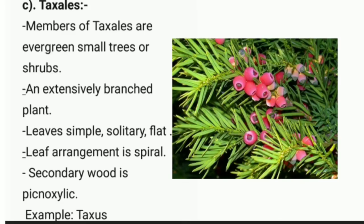The third order is Taxales of class Coniferopsida. Members are evergreen, small trees or shrubs, extensively branched. Leaves are simple, solitary, and flat, with spiral arrangement. Secondary wood is pycnoxylic. An example is Taxus. On screen you can see the image of Taxus.